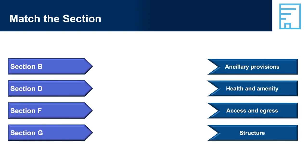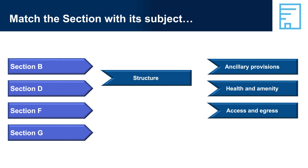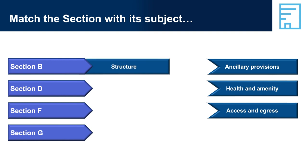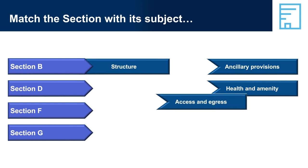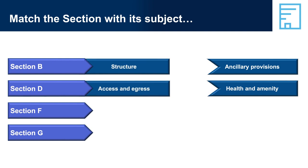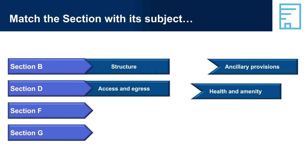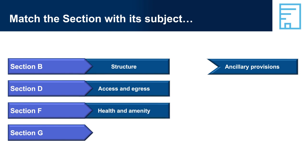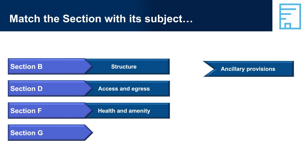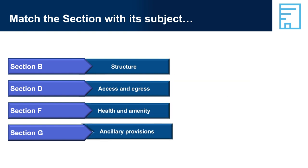Match the section with its subject: Section D equals access and egress. Section F equals health and amenity. Section G equals ancillary provisions.